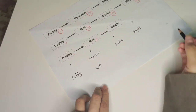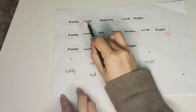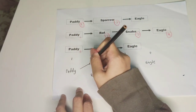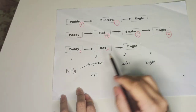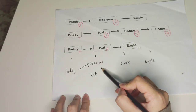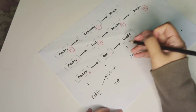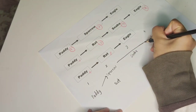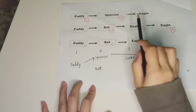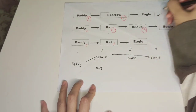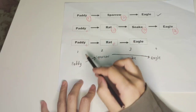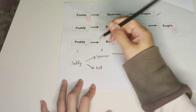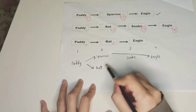Next, I'm going to draw the arrows for the food web. We start with paddy eaten by sparrow. Next, sparrow eaten by eagle — that is the first food chain. Next, the second food chain: paddy eaten by rat. Make sure you draw the arrow according to the food chain. Rat eaten by snake.